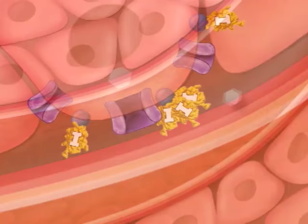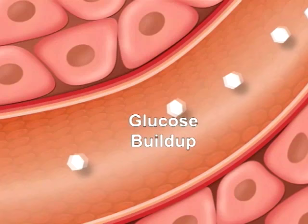With both types of diabetes, glucose cannot be used for energy, and it builds up in your bloodstream, causing potentially serious health complications.